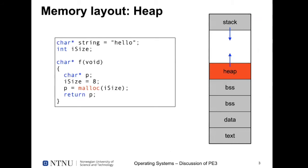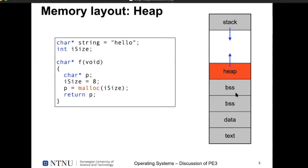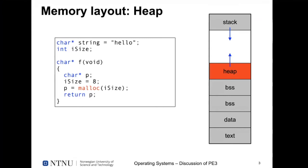Looking at our heap layout — note there's one BSS segment, not two — we have static memory for program code in the text segment, then data and BSS segments for initialized and uninitialized global variables respectively, and the stack which grows downward containing stack frames with local variables and return addresses.